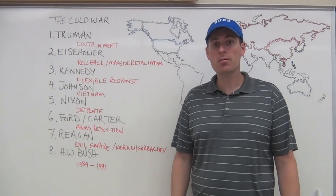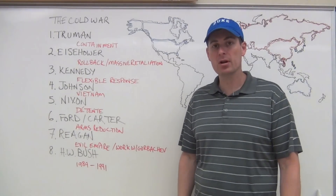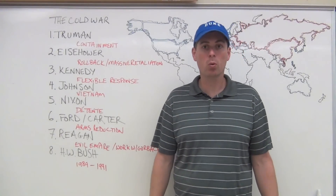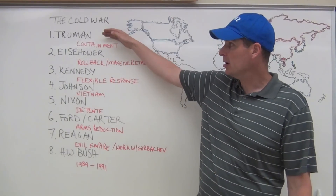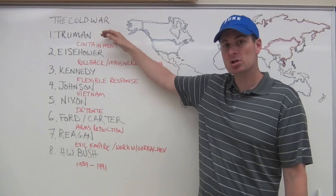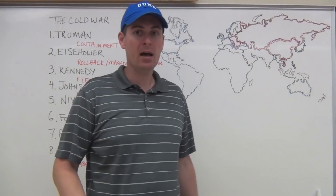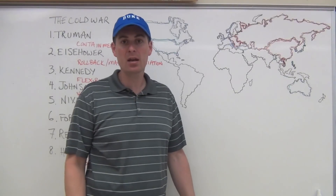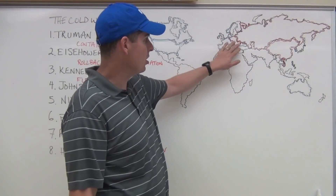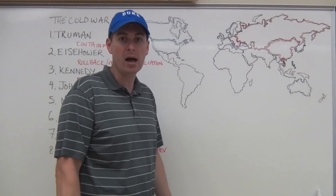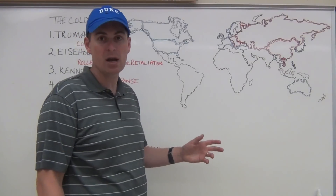Good afternoon and welcome to another AP U.S. History video with Mr. Pate. This is another in the series of review videos getting you ready for the exam. We're going to give you a landscape macro-sized overview of the Cold War with a map to help you have geographic context. Starting out, we have Truman as the first president. His strategy is going to be called containment, as he becomes aware from George Kennan and Winston Churchill that there is a Soviet threat and that Eastern Europe is basically being forcibly held as a communist buffer zone bloc.